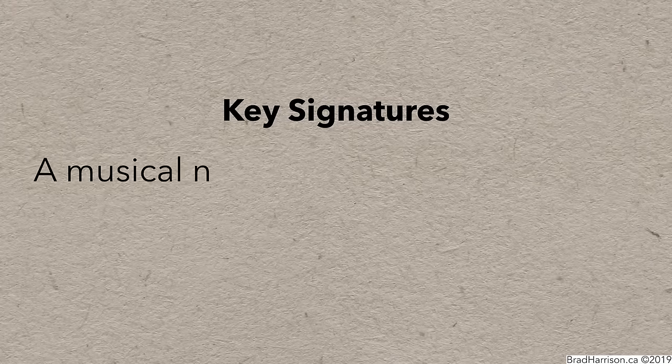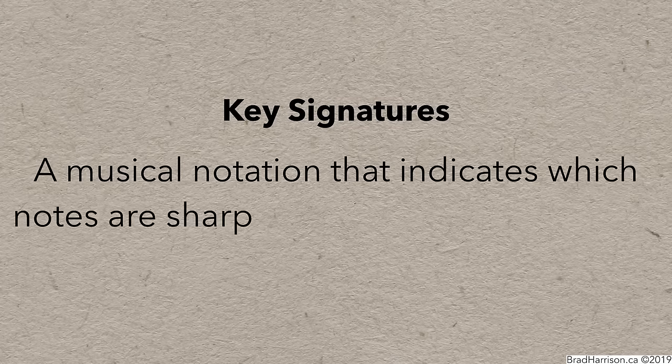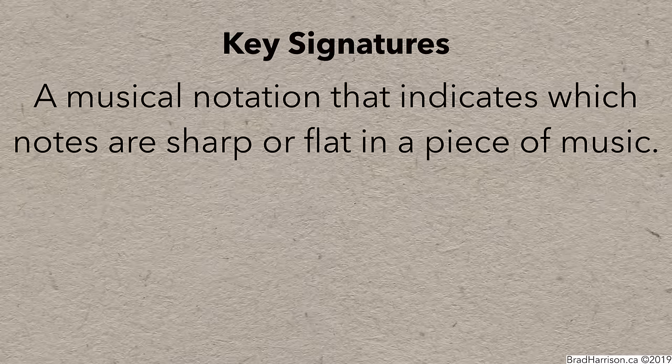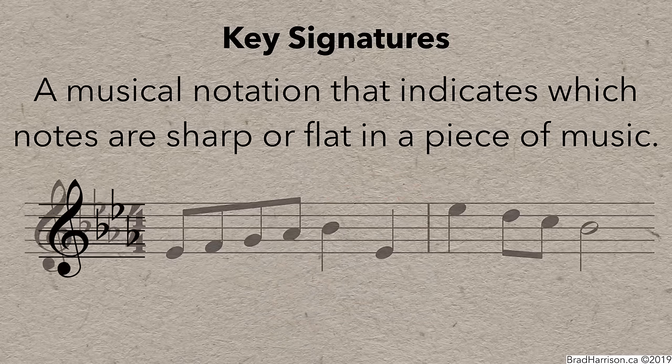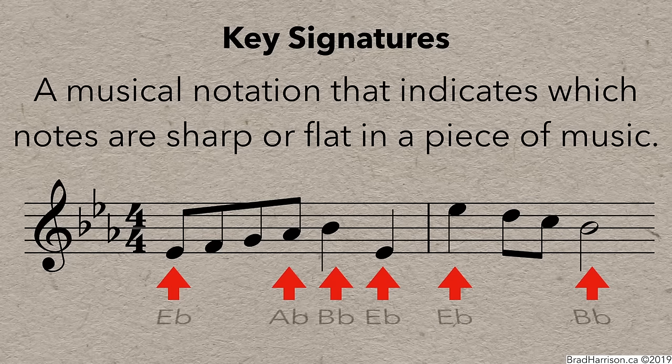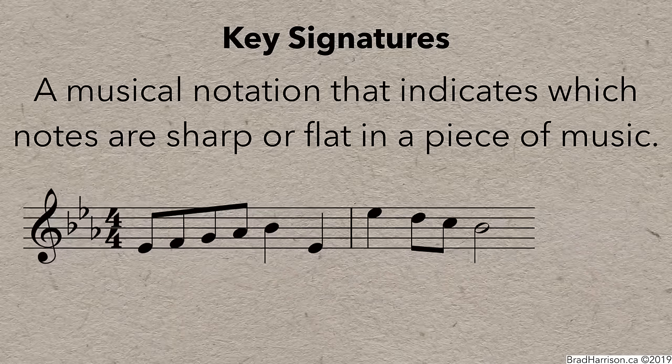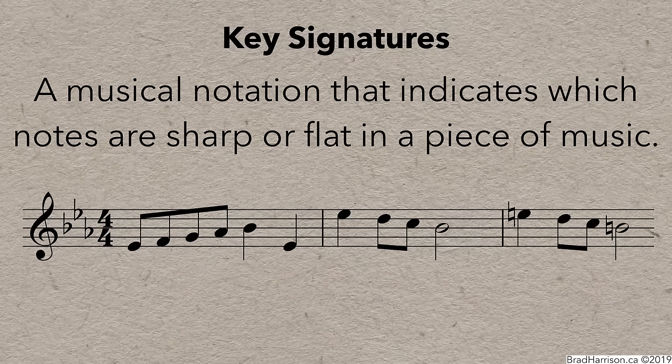The last thing is something called key signatures, which are a musical notation that indicate which notes are sharp or flat in a piece of music. For instance, this says that all Bs, Es, and As are flat. A notation like this affects all these notes. However, any note can be changed by adding accidentals, which would override the key signature. And that's just about everything you need to know about note naming.